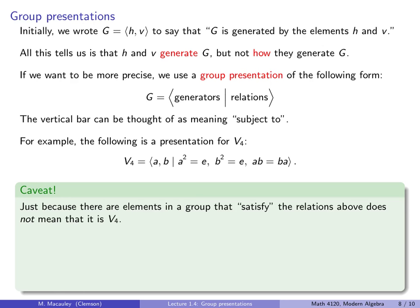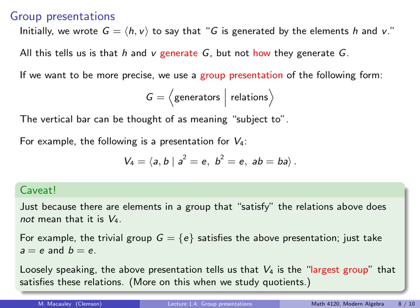A quick caveat is just because there are elements in a group that satisfy the relations above does not mean that it actually is V4. For example, the trivial group, consisting just of the do-nothing element, or the identity, it satisfies this presentation. The trivial group, if we let A and B be equal to the identity, they are generated by A and B. Clearly, the identity squared is the identity. And E times E equals E times E. So the trivial group satisfies that. Loosely speaking, the above presentation tells us that V4 is the largest group that satisfies these relations. More on this when we study quotients, although I will say some of it you won't see. The proper way to formalize group presentations really should be done in a graduate level class. Although it's a basic enough concept that I can introduce it here, and you can understand it, and it can be a nice intuitive tool that helps you understand and analyze groups.